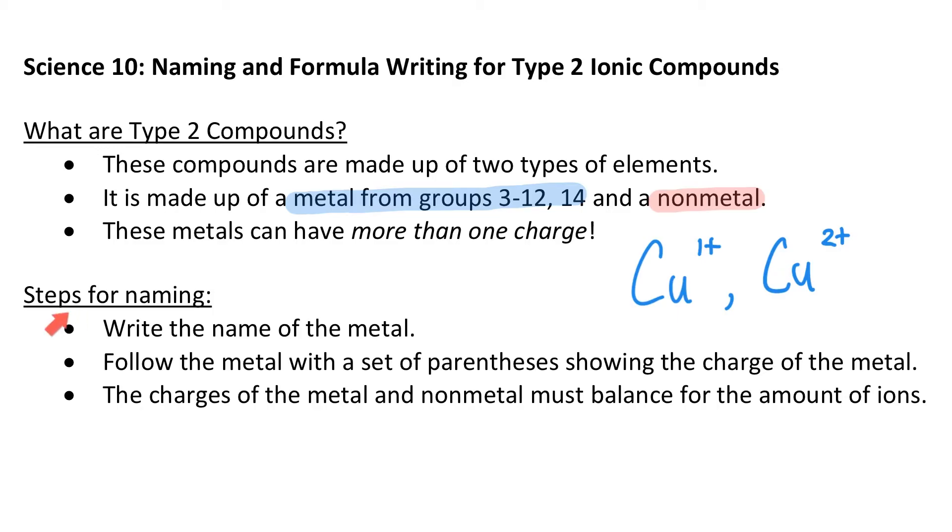So the steps for naming these type 2 compounds, the very first thing you're going to do is write the name of the metal. And afterwards you're going to follow the metal with a set of parentheses showing the charge on the metal. And how you do that, let's check that out down here.